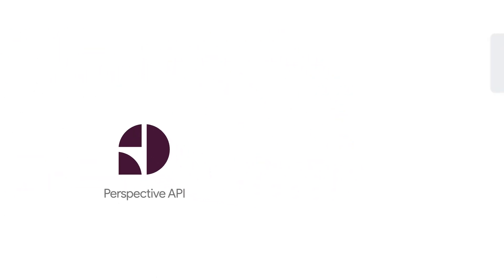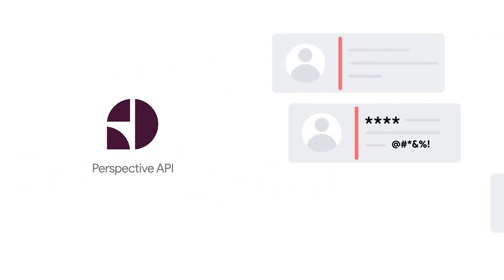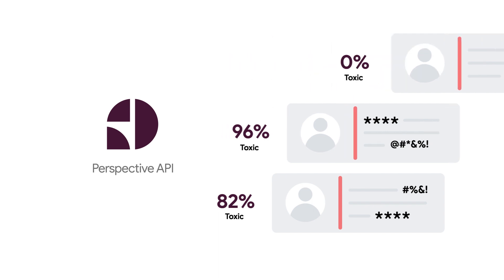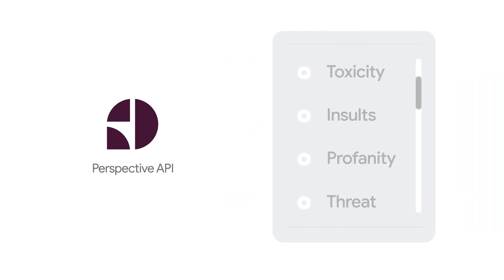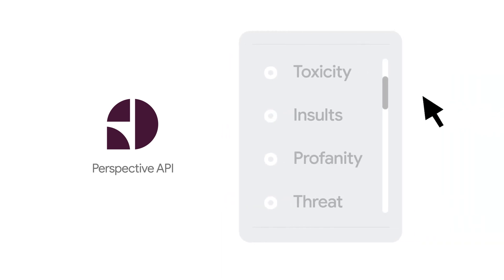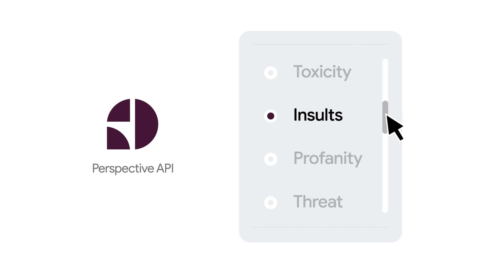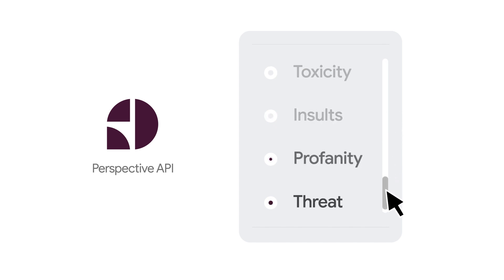The Perspective API uses machine learning to score phrases based on the perceived impact the text may have in a conversation. It can provide scores for a number of toxicity attributes such as severe toxicity, insults, profanity, identity attack, threats, and sexually explicit comments.